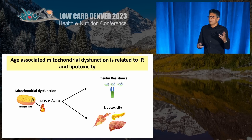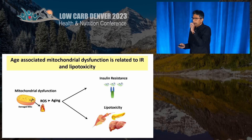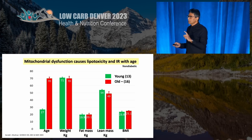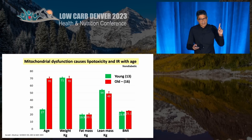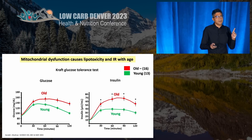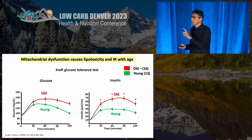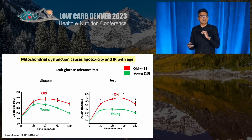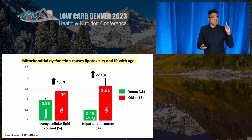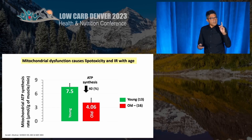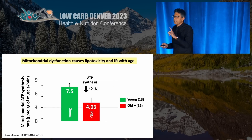Let's take another group: older people. Age is associated with mitochondrial dysfunction, insulin resistance, and lipotoxicity. This study took individuals in their 20s versus their 70s — the only difference was age. They were similar in weight, fat mass, lean mass, and body mass index. But on a glucose tolerance test, the older individuals had higher glucose and higher insulin levels, indicating insulin resistance. This was also accompanied by larger amounts of muscle fat and liver fat, and their mitochondria didn't function well — they were able to generate less ATP.